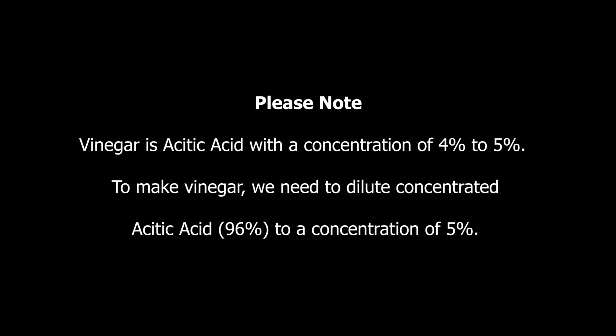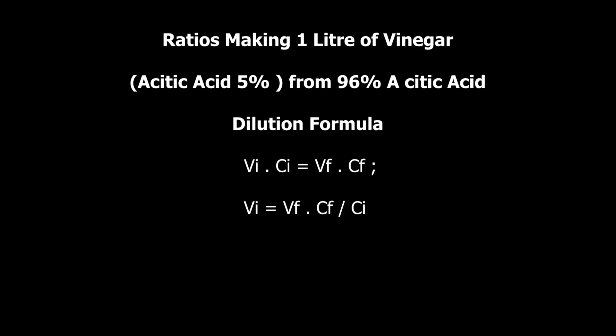Let's get back to our main topic. In this video I'm going to show you how to manufacture vinegar. Vinegar is simply obtained from the dilution of concentrated acetic acid. Vinegar is acetic acid at a concentration of 4% to 5%. To make vinegar, we need to dilute concentrated acetic acid. In this video, the concentrated acetic acid we're using has a concentration of 96%, and we're going to dilute it to 5%. Let's look at the ratios for making one liter of vinegar.